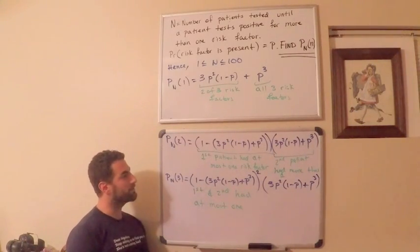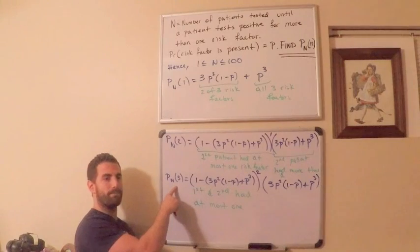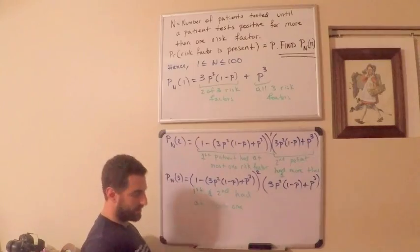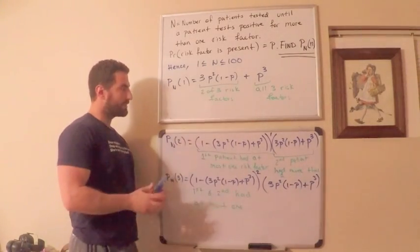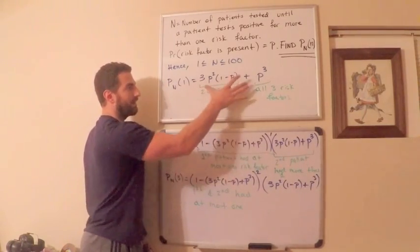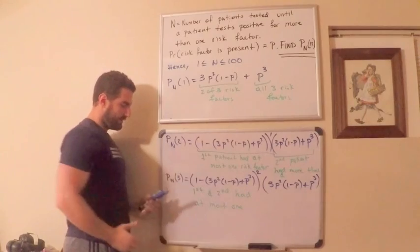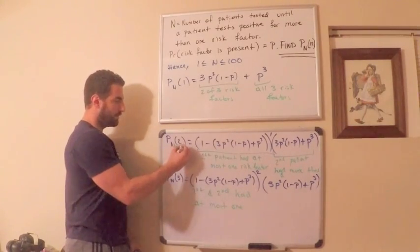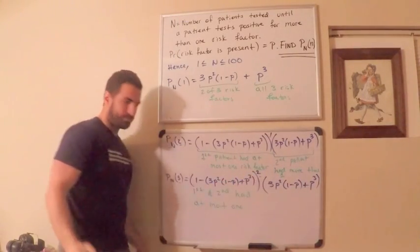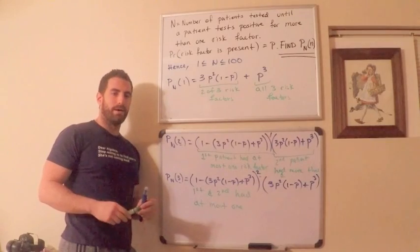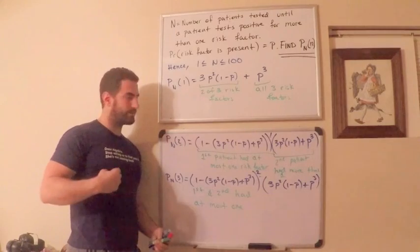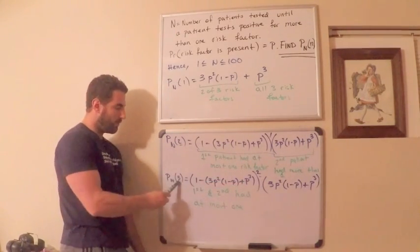You can already see a pattern here. Notice the first case has the failure quantity to the zeroth power; when n is 2, the power is 1; when n is 3, the power is 2. If you're familiar with the geometric distribution, you recognize this is exactly the number of trials until the first success — the power on the failure term is always one less than n.